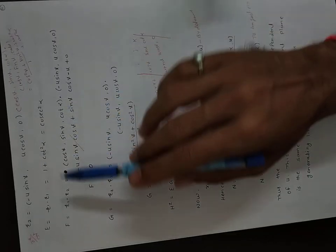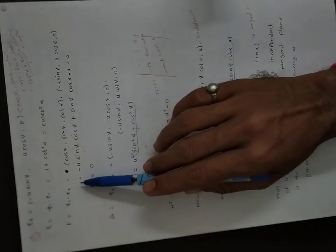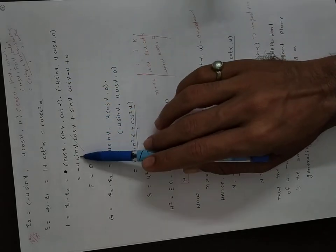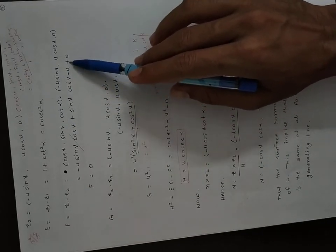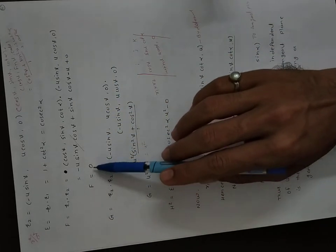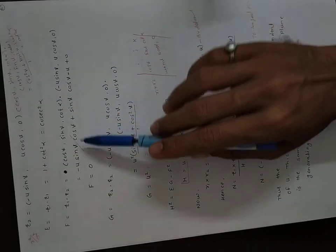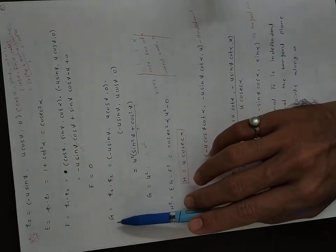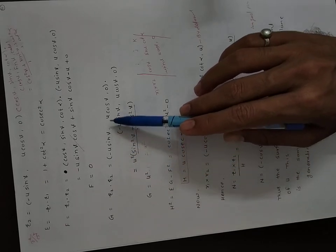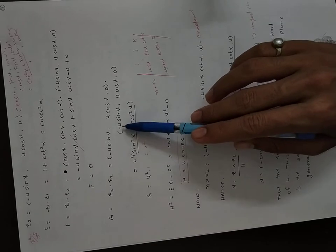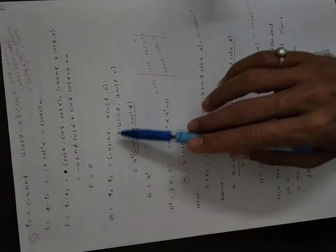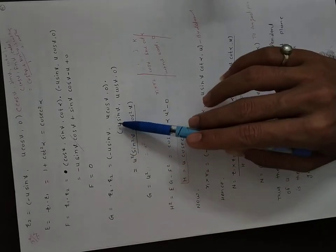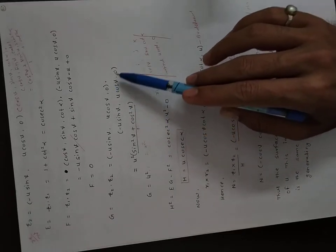F = r₁·r₂ = (cos v)(−u sin v) + (sin v)(u cos v) + (cot α)(0) = −u sin v cos v + u sin v cos v = 0. G = r₂·r₂ = (−u sin v)² + (u cos v)² + 0 = u²(sin²v + cos²v) = u².